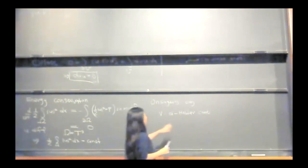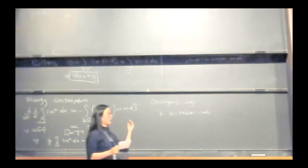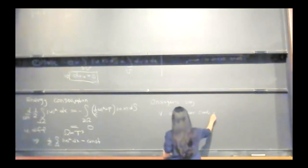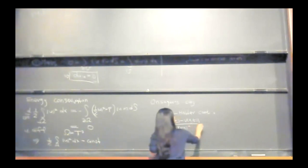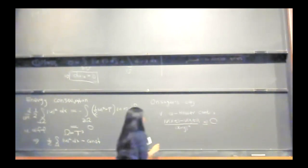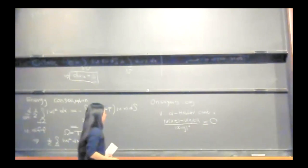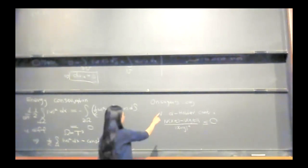To be precise, he considered alpha Hölder continuous velocity. Here, alpha can be any number between 0 and 1. Roughly speaking, alpha Hölder continuity corresponds to alpha times differentiability.